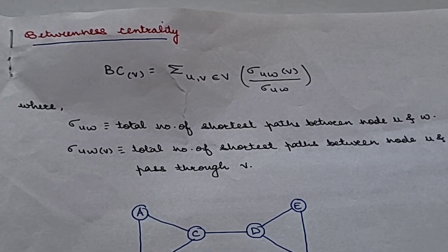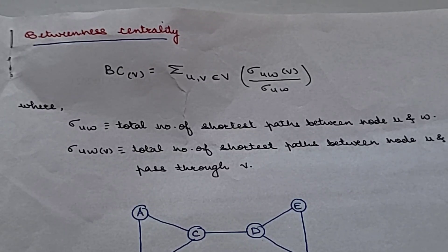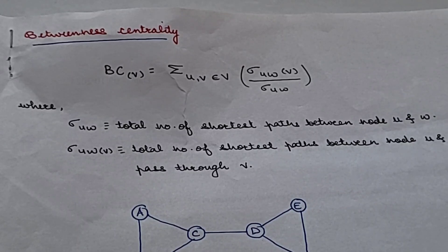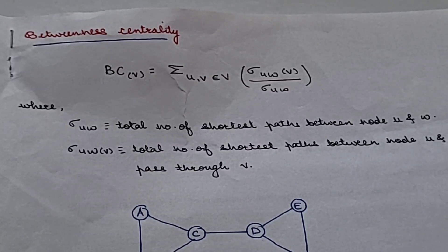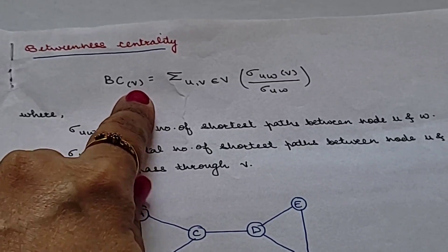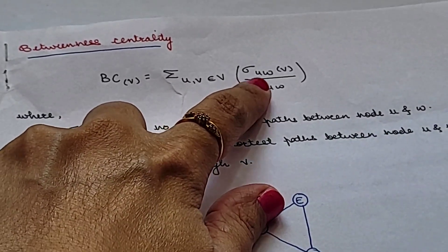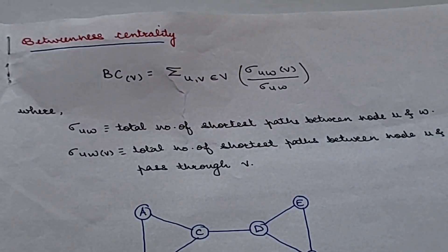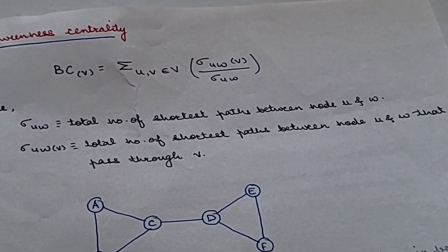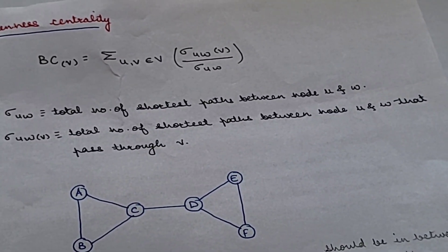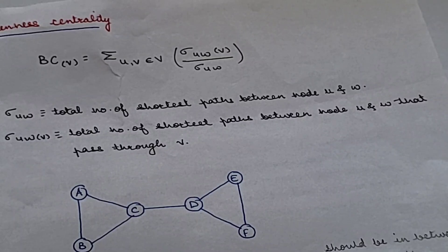Betweenness centrality is a key concept in network analysis that measures the importance of a node in terms of its role as a bridge between other nodes. It quantifies how often a node appears on the shortest paths between a pair of nodes in a network. It is given by the formula: BC(V) = summation over U,V of sigma(U,V,V) divided by sigma(U,V), where sigma(U,V,V) represents the total number of shortest paths between nodes U and V that pass through V, and sigma(U,V) represents the total number of shortest paths between U and V.